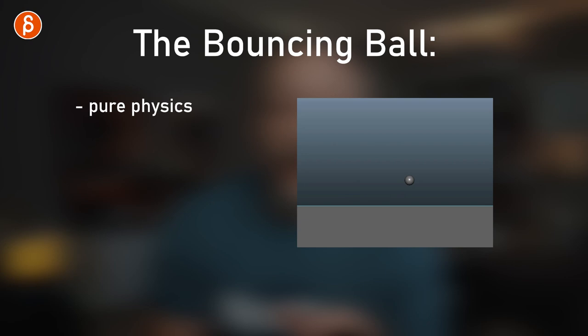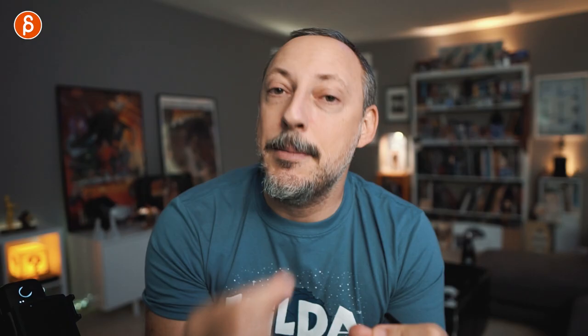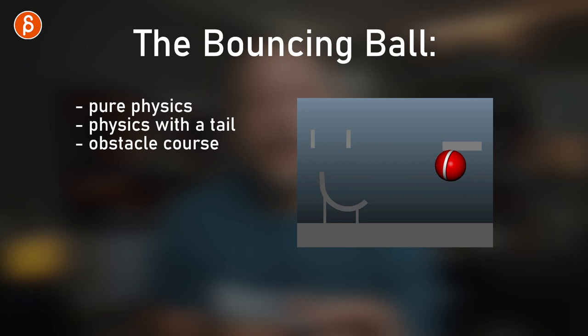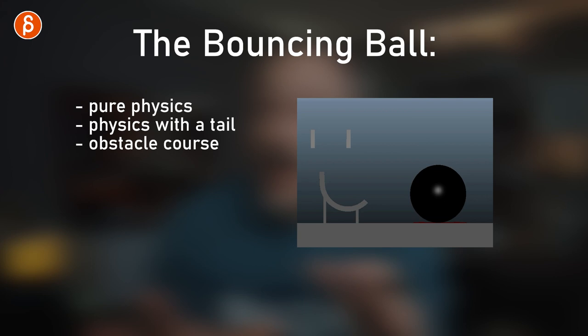The classic exercise everybody should do — don't skip it — is the bouncing ball. It might sound boring, but I'll do a clip showing how the bouncing ball is everywhere. First, do a bouncing ball that's pure physics. Then make it more complicated by adding a tail — still all physics, but you learn about drag and overlap. Then go from a static up-and-down to a left-to-right, and you can add an obstacle course — still physics-driven, but with more complex interactions.